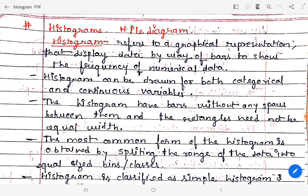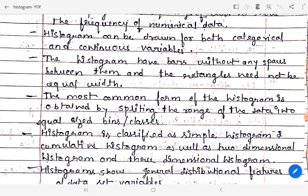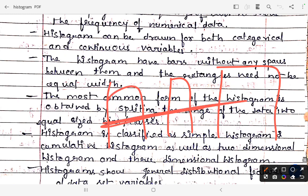A histogram can be drawn for both categorical and continuous variables. Categorical means data that can be categorized. The histogram has bars without any spaces between them, and their rectangles need to be of equal width. So basically, this bar has a width and it should be equal width throughout.